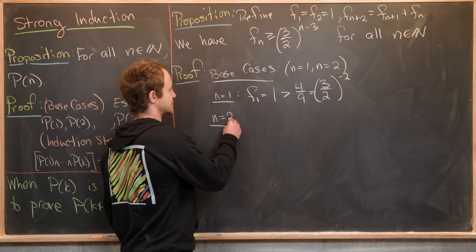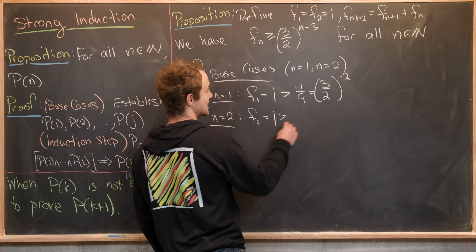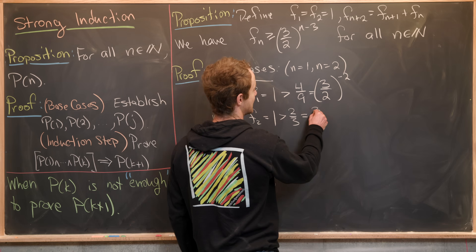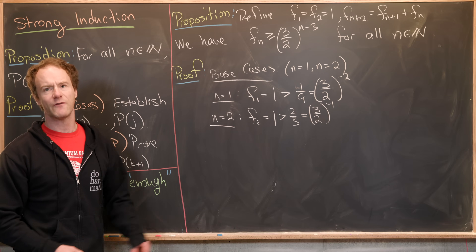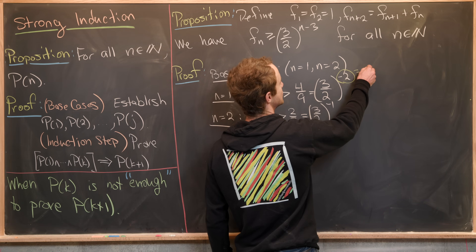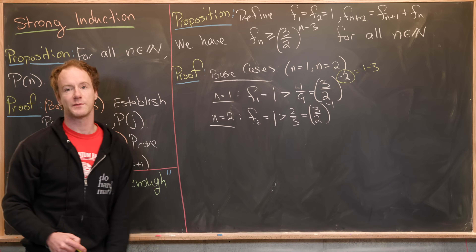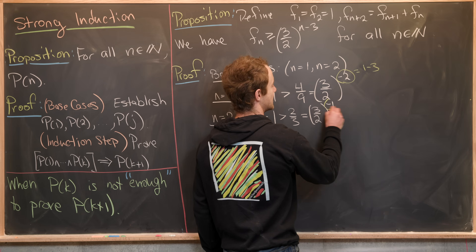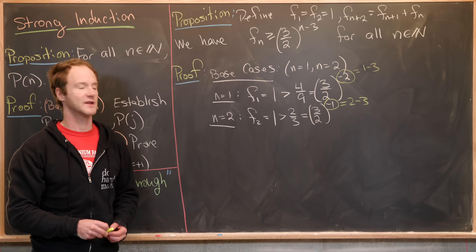For n=2: f_2 = 1, and that's bigger than 2/3, which equals (3/2)^{-1} = (3/2)^{2-3}. To be explicit: -2 = 1-3 follows the formula, and -1 = 2-3 also follows the formula.